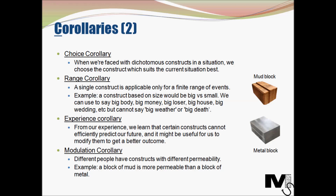The next type is the modulation corollary. This corollary explains that different people have constructs with different permeability. Permeability is the ease through which liquids or gases can pass through objects — for instance, a block of mud can be more permeable than a block of metal. The more permeable our constructs are, the easier it is to modulate or change them with new information.